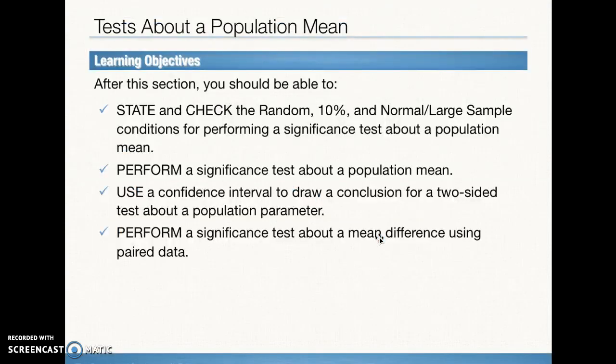We have several learning objectives. These parallel the ones from Section 2. State and check the conditions for inference. Perform an inference test about a population mean — remember that's talking about our state, plan, conclude full format. Use a confidence interval to draw a conclusion for a two-sided test about a population parameter. Last of all, perform a significance test about a mean difference using paired data.